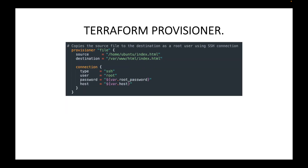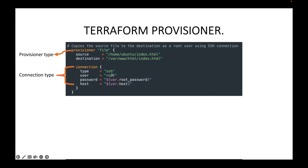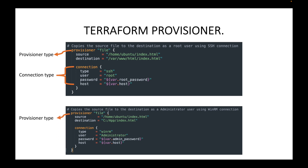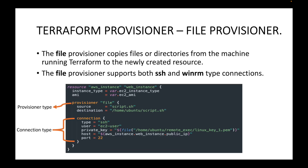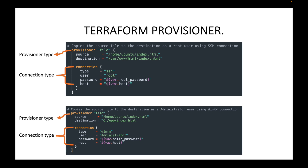Here we have defined the provisioner block, and this is the connection block for the provisioner. The provisioner type here is file, and I'm using SSH as the connection type for the Linux machine. Likewise, there is another connection block for the Windows machine using WinRM for connectivity. In the next session we will see examples for each of these types, but this is how you define your provisioner block and connection block.